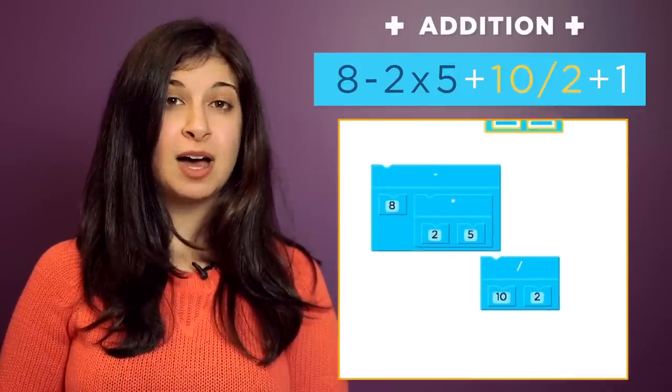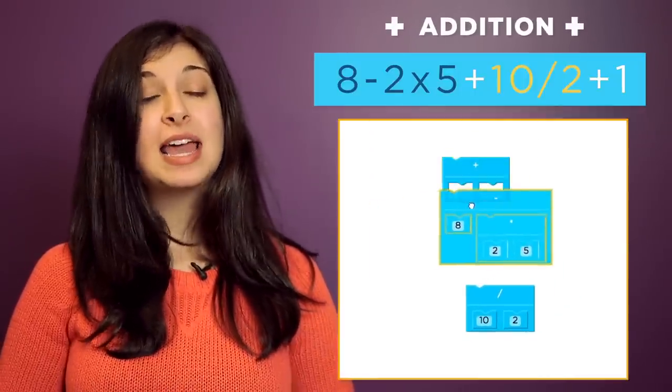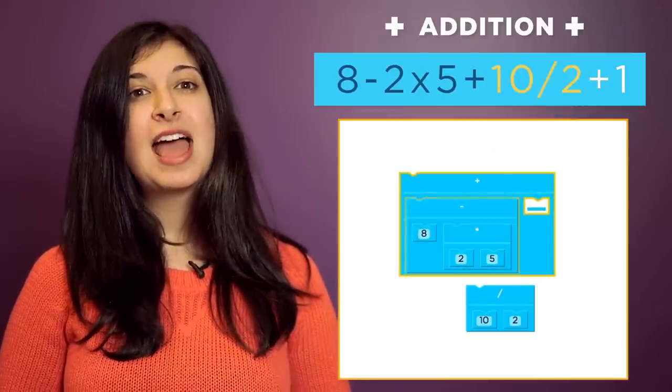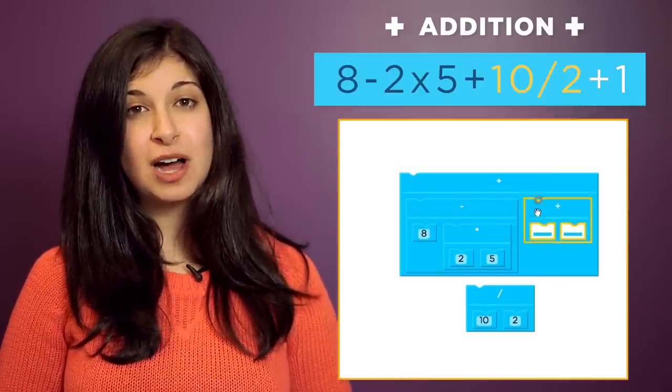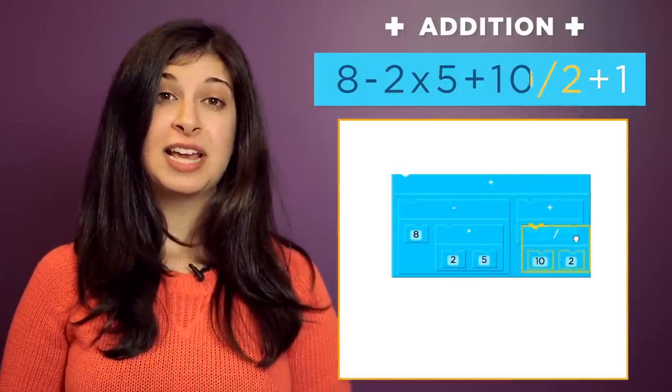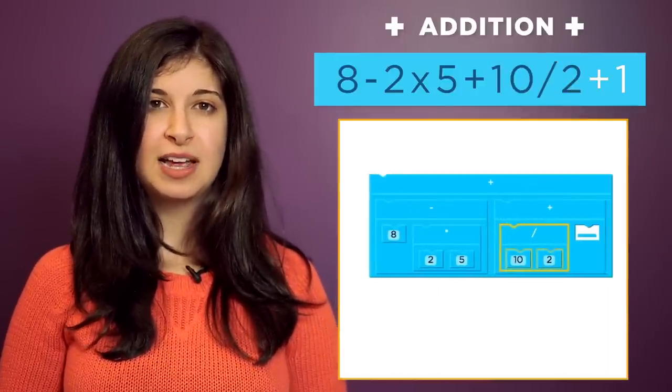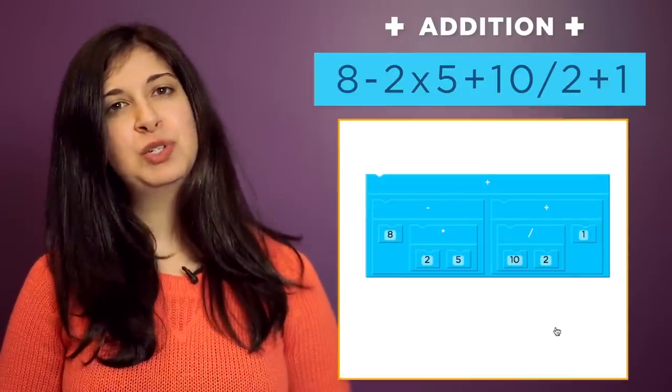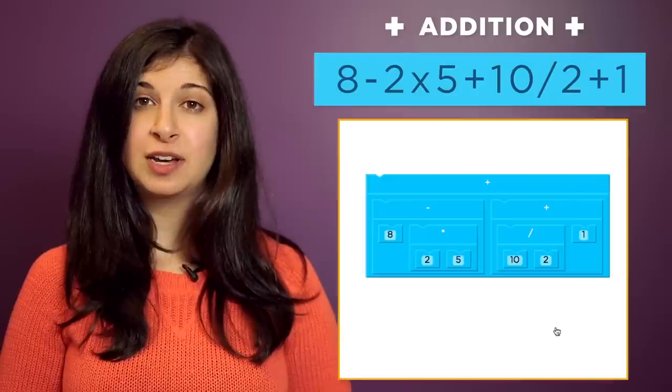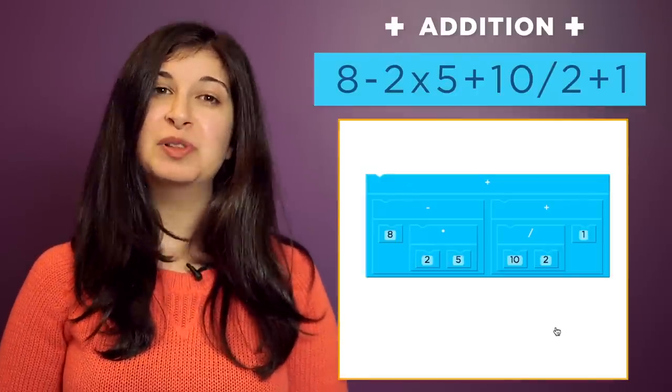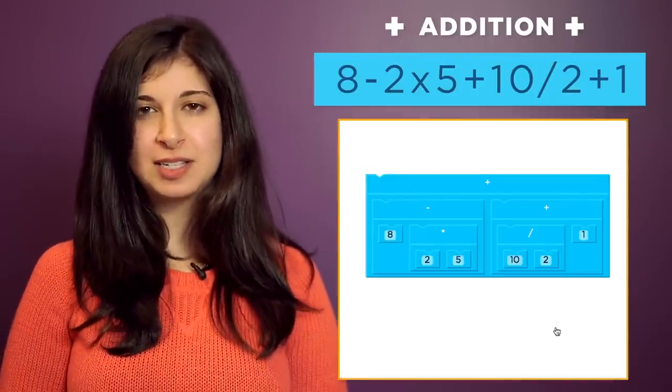Then, we'll grab an addition block, plug in our whole 8 minus 2 times 5 expression on the left and another addition block on the right. Then finally, we can plug in our 10 divided by 2 on the left side and 1 on the right. 8 minus 2 times 5 plus 10 divided by 2 plus 1. And that's it. The block version of this mathematical expression.